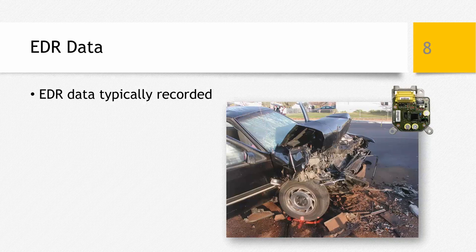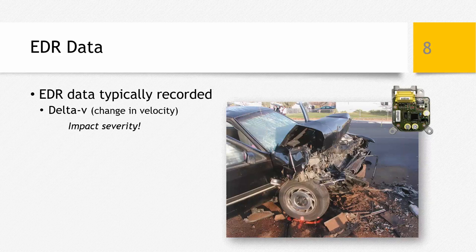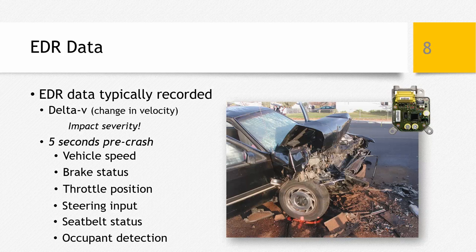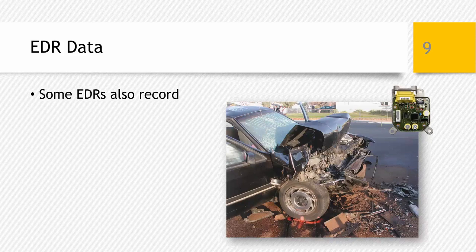Most event data recorders contain the impact delta V, or the change in velocity. Delta V is used to determine the severity of an impact and can be used to assess the potential for injury in a car crash. Most EDRs record five seconds of pre-crash data — what was happening five seconds before impact — in one-second or half-second intervals, including vehicle speed. Other common pre-crash data elements include brake status, throttle position, steering input, seat belt status, occupant detection, and a whole lot more.